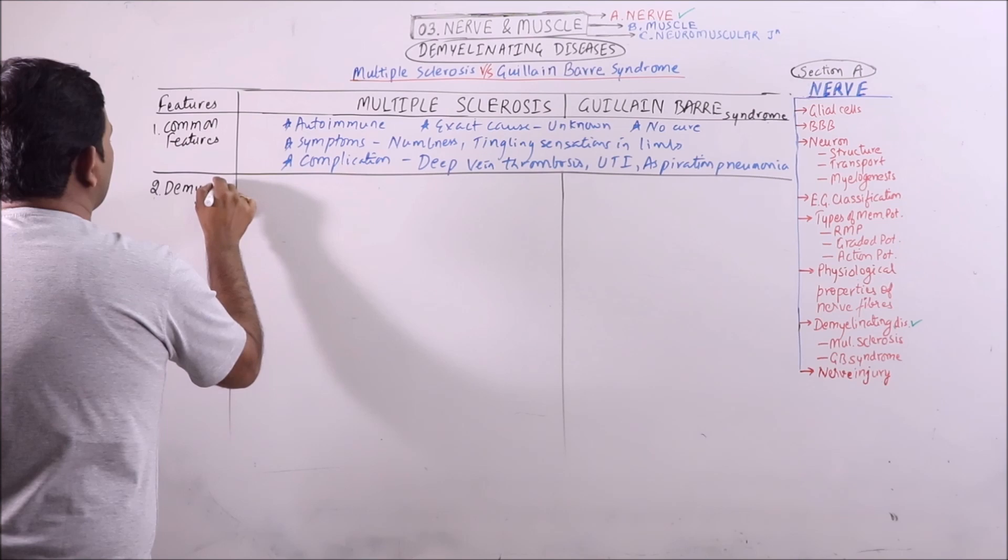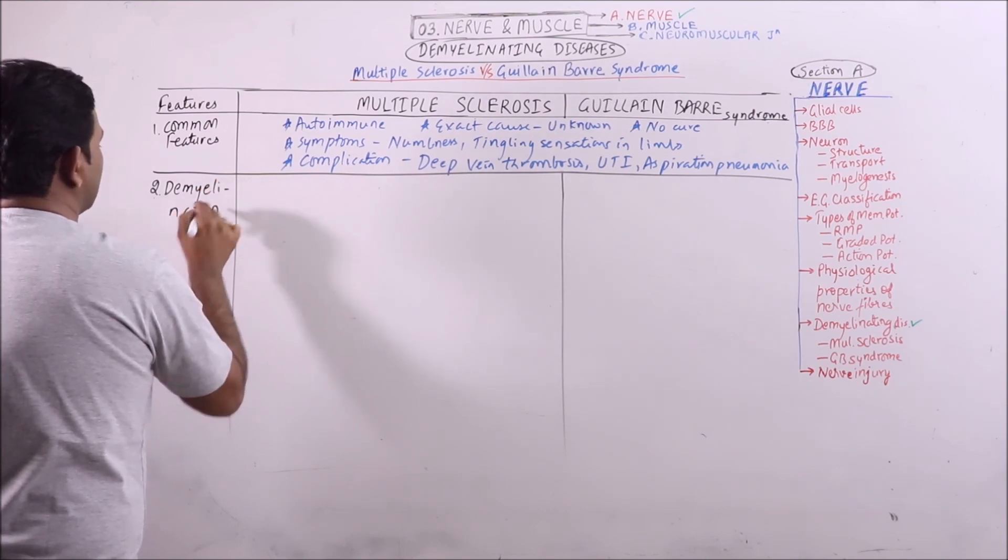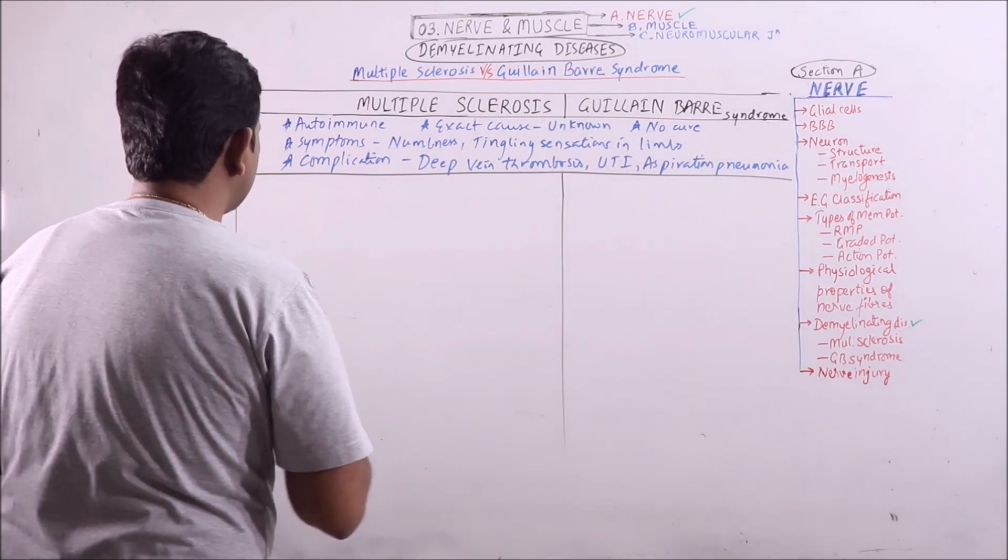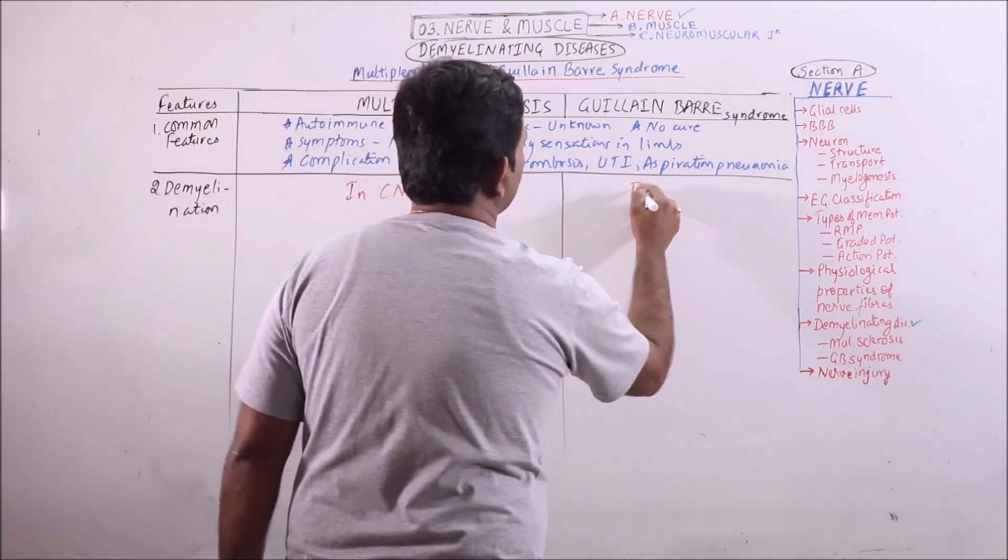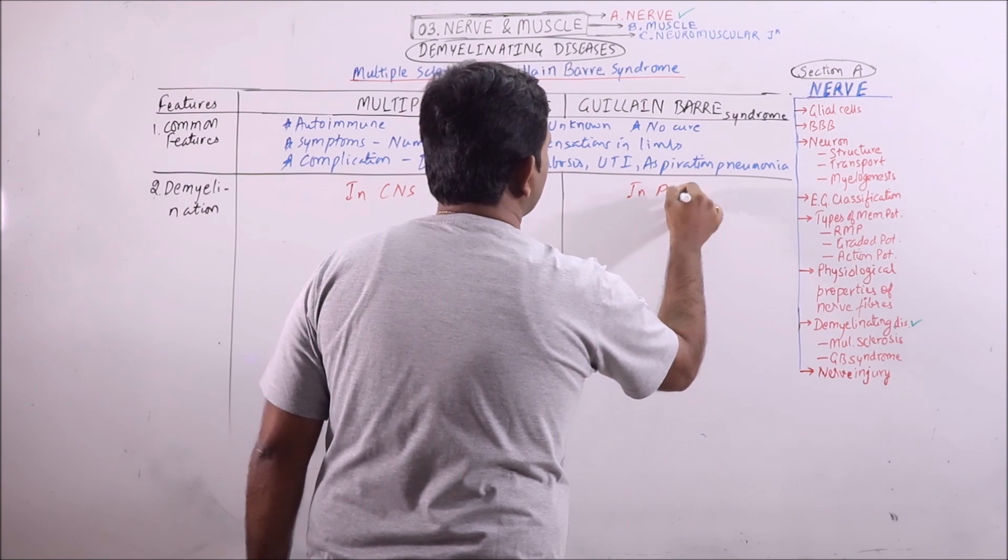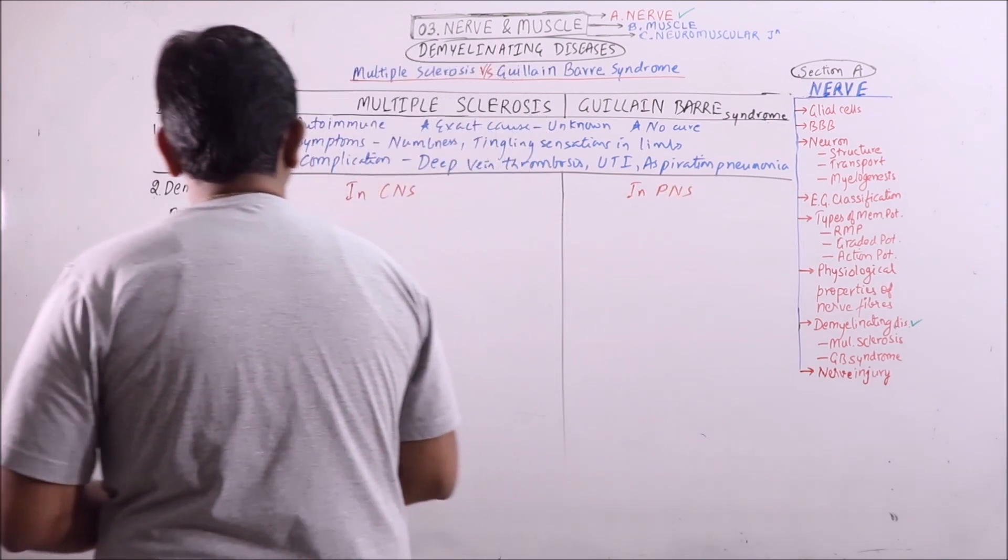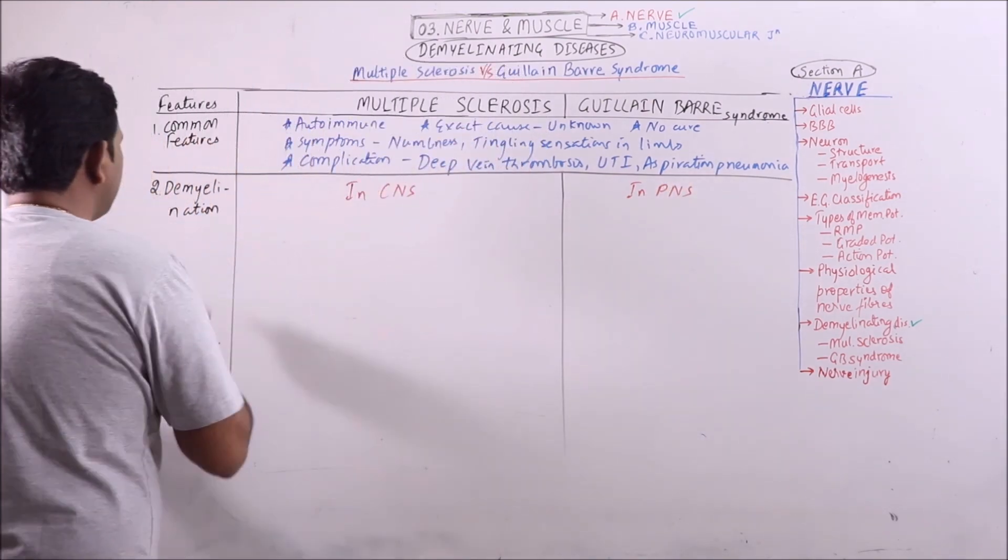Now, demyelination occurs in CNS, here demyelination occurs in PNS - that is central nervous system and peripheral nervous system.